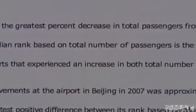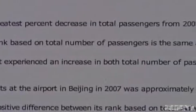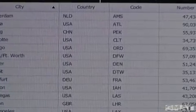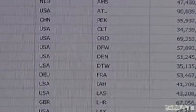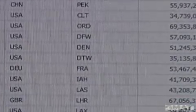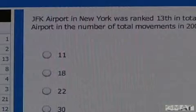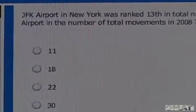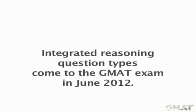Unlike traditional multiple choice questions, there may be more than one true statement. You may also be asked to use the same table to answer other questions demanding different skills, such as assessing the reason for, or likelihood of, certain outcomes. In this case, you would use a table to figure out where an airport would rank.